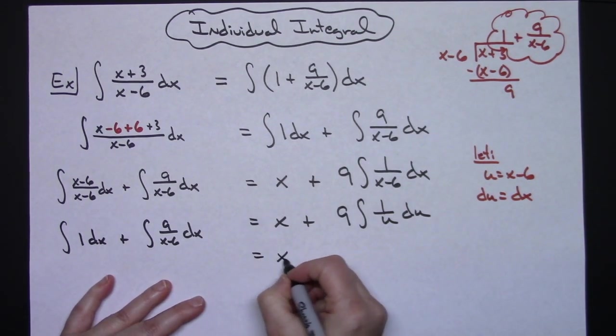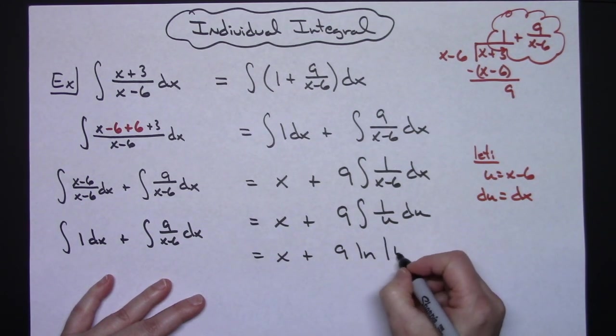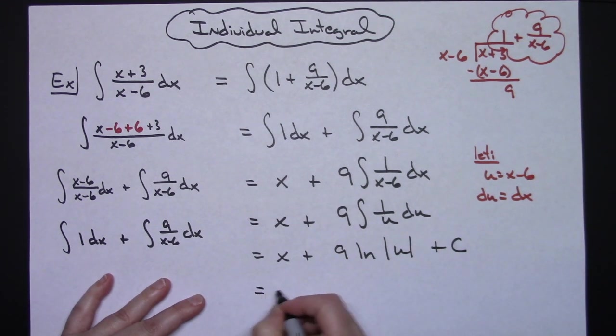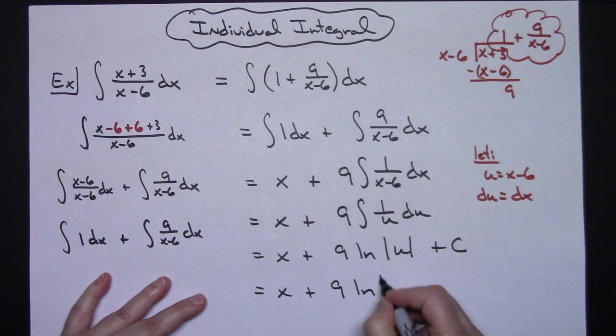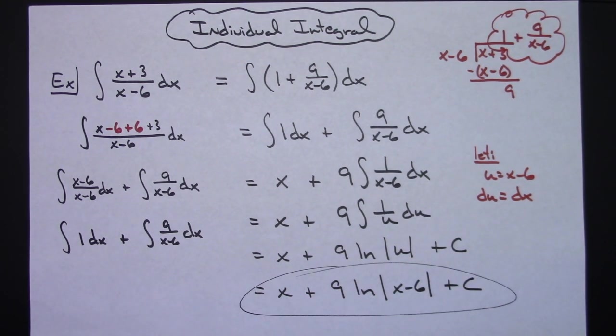And then hopefully everyone knows that that integrates to natural log of absolute value of u. So x plus 9 times natural log absolute value of u plus C. Replacing that u with what it equals: x plus 9 times the natural log absolute value (x-6) plus C for a final answer.